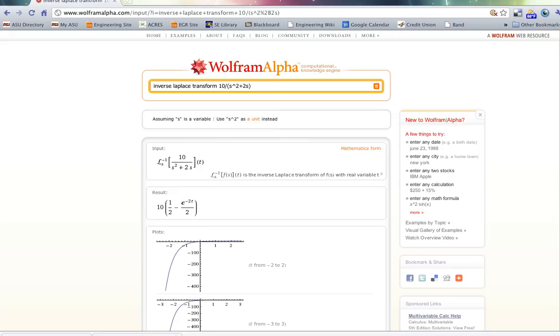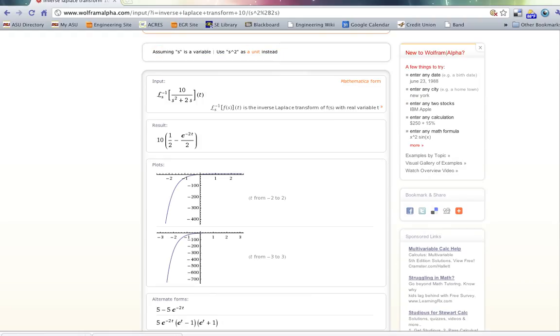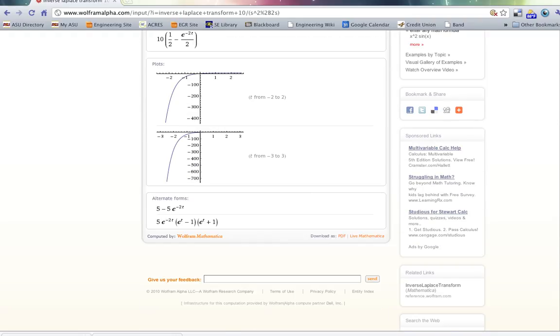It tells me, it doesn't really plot it in a way that's all that useful, but it shows me that it starts at 0 and goes up to some value. It also shows me alternate forms that you might find interesting. It tells me that I can write this as 5 minus 5e to the minus 2t and so on.